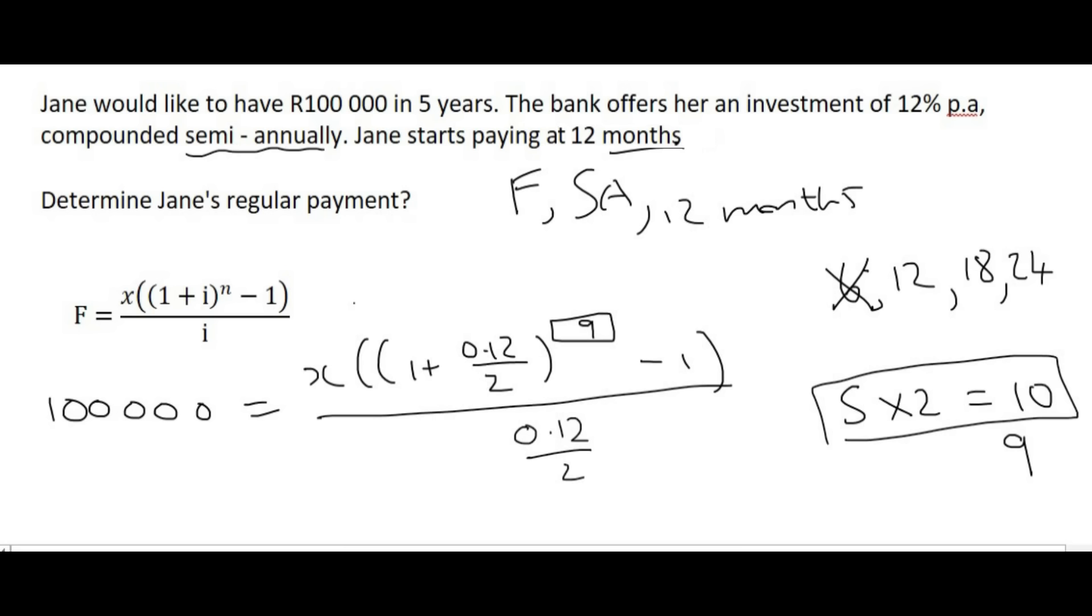We'll put a nine over there and then 0.12 over two. Now we can just go solve this like we did with the previous question on Andrew. And your final answer for x should be R8,702.22.